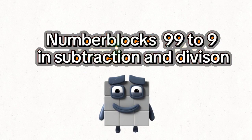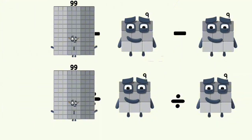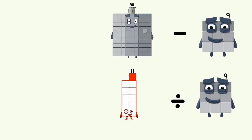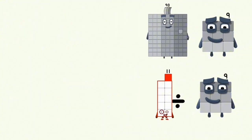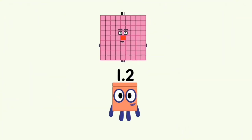Number Blocks 99 to 9 in subtraction and division. 99 minus 9 and divided by 9 equals 90 and 11. 90 minus 9 and 11 divided by 9 equals 81 and 1.2.